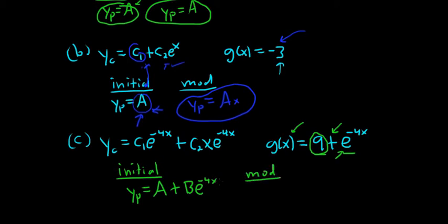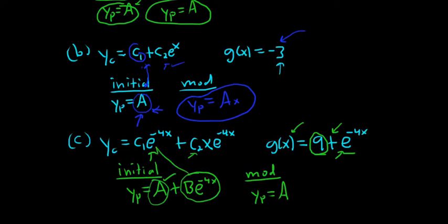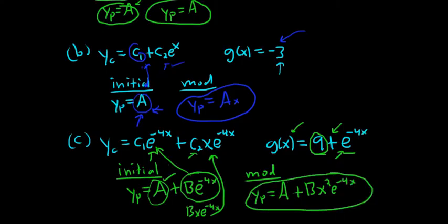Now we'll do the modified. Because it was two separate guesses, we do it twice. We look at A — is there repetition? No. So A stays the same for the modified. Now we look at B e to the negative 4x — is there repetition? Yes, there is. So we multiply by x to get Bx e to the negative 4x. But look — there's still repetition with C2 x e to the negative 4x. So we multiply by x again to get Bx squared e to the negative 4x. You see the repetition, so you multiply by x, but that's not enough because there's already an x there — so you actually need x squared. That's the form of Yp.